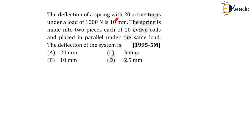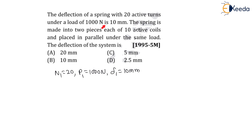The deflection of a spring with 20 active turns under a load of 1000 newton is 10 mm. Initially the active turns n₁ is given as 20, the load p₁ is 1000 newton, and deflection δ₁ is equal to 10 mm. This is the given data. The spring is then made into two pieces, each of 10 active coils.